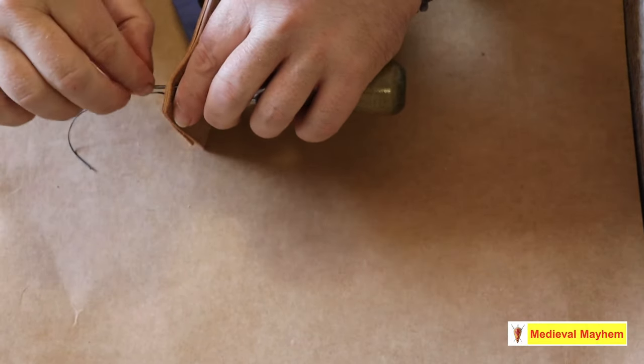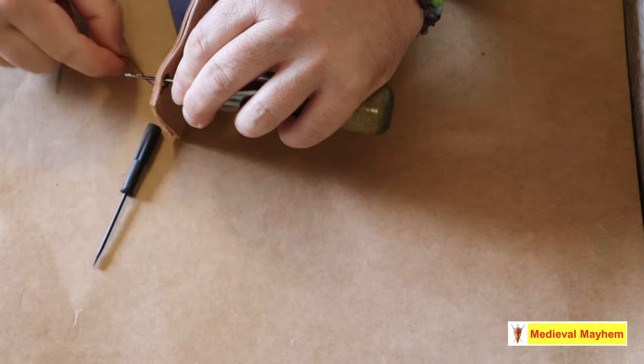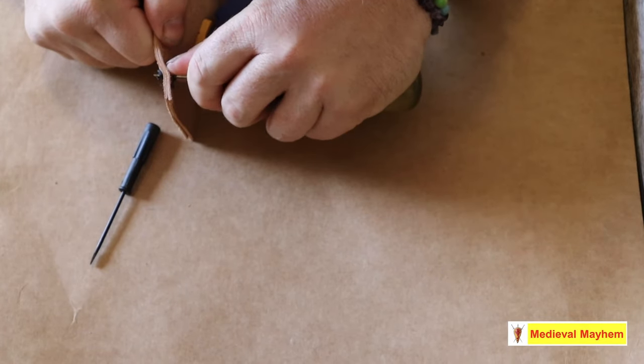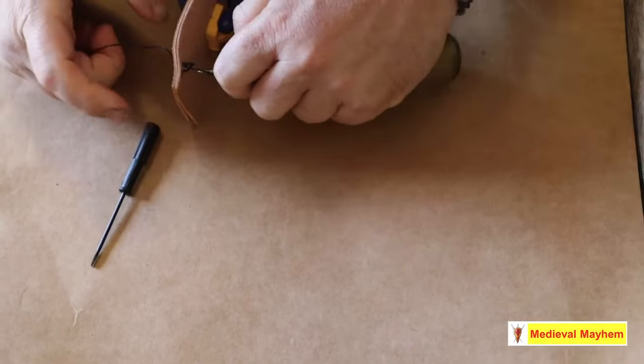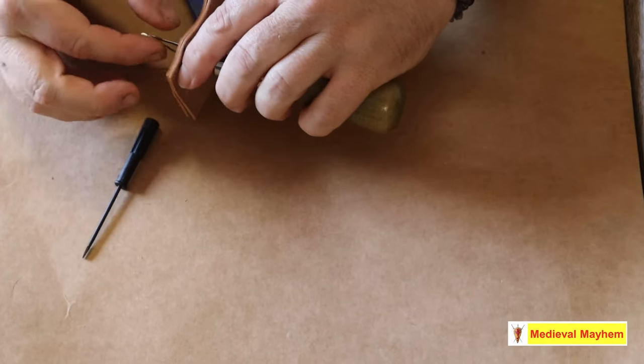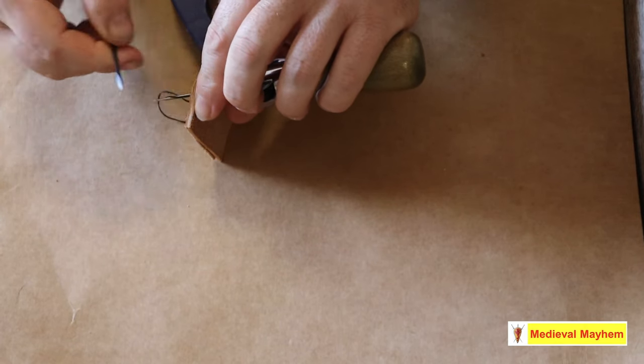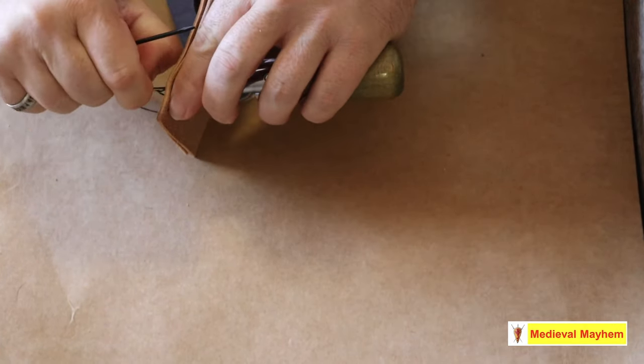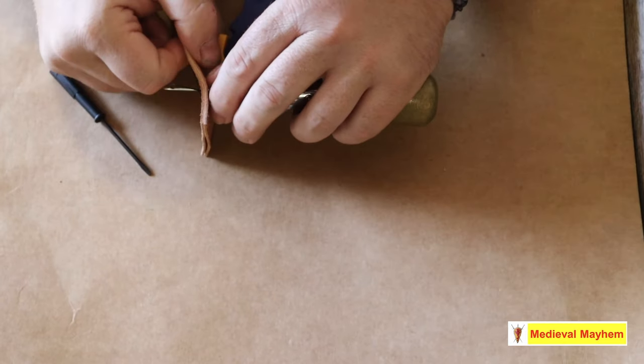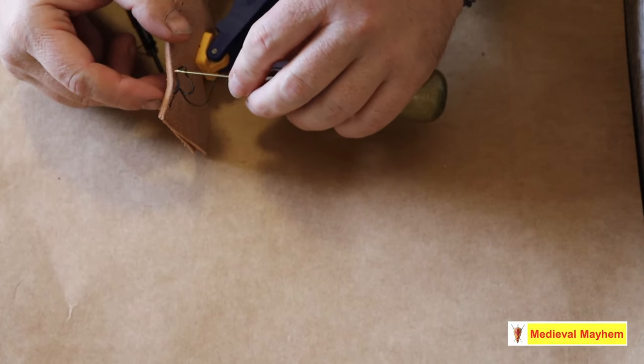Insert the needle, find the thread, pull a loop, insert the tag, hold the tag, withdraw the needle. Insert the needle, find the thread, use the tag, hold that nice and firm and withdraw. And just keep repeating that process.